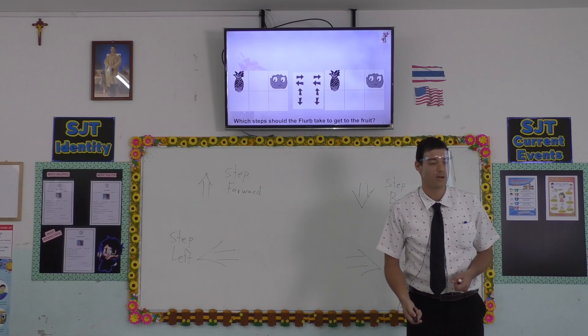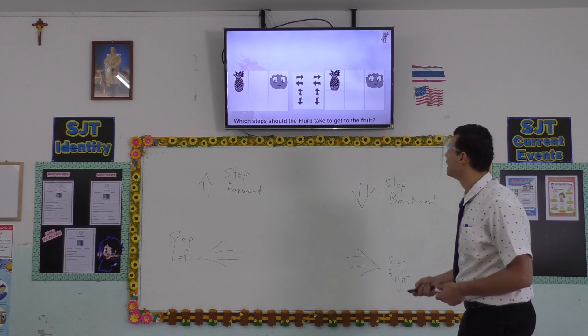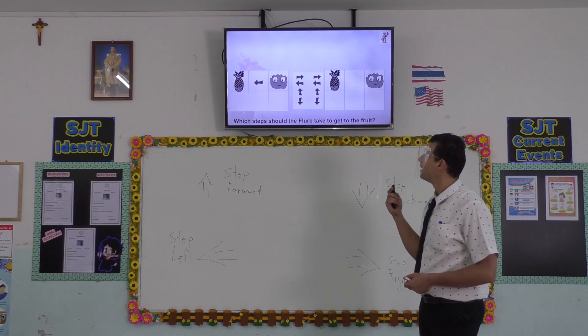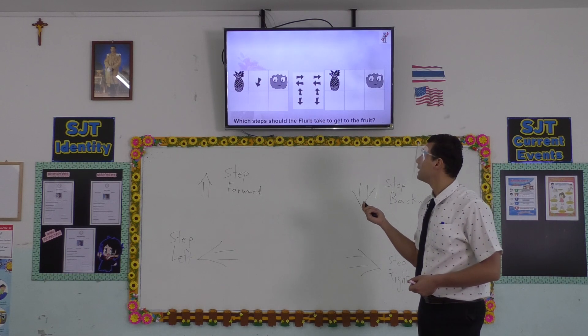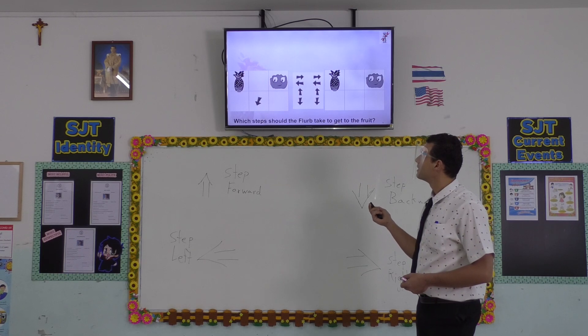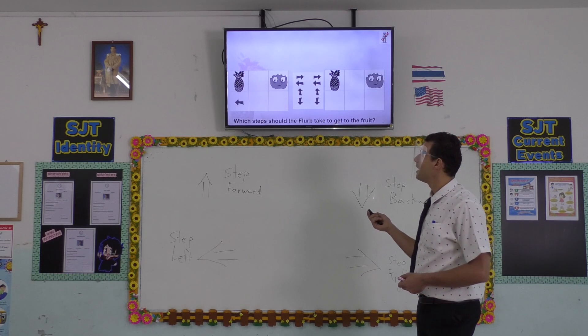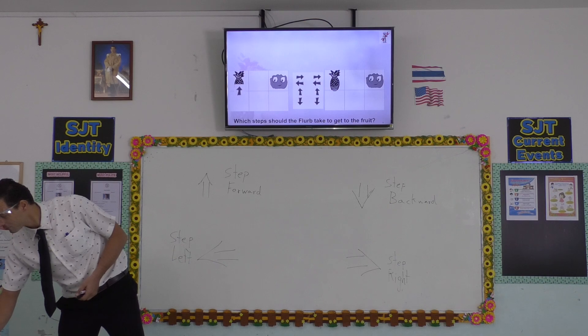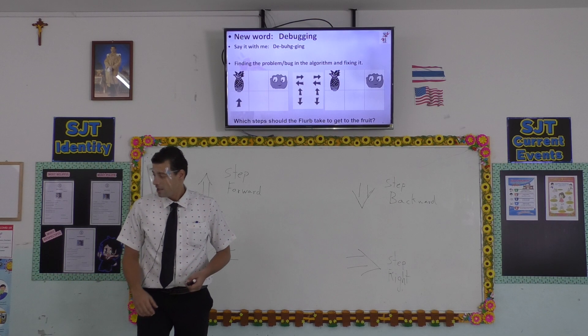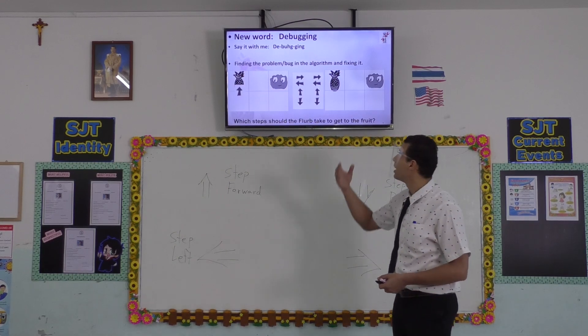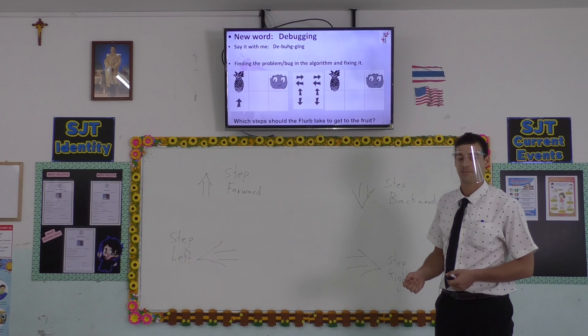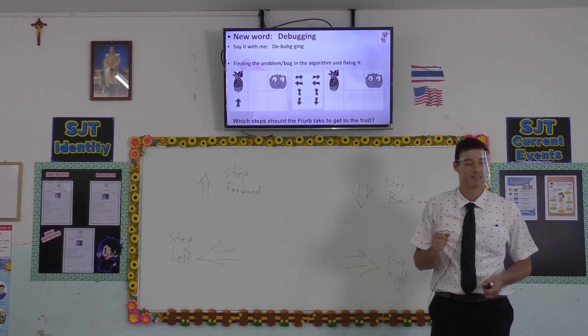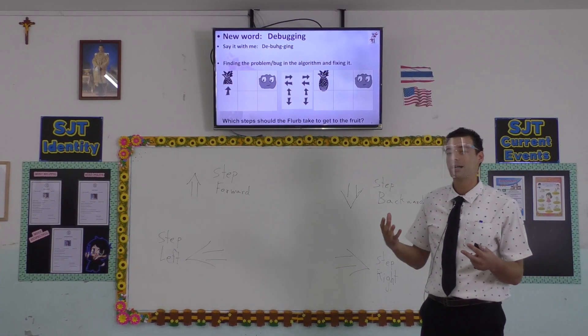What about the next problem. Karen, can you help me? Step left. Very good. Step backward. Interesting. Step left again. And step forward. Okay. So is there a problem in this algorithm. No, there's no problem. The goal was to get Flerb to the fruit. So there's no bug really.